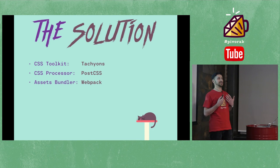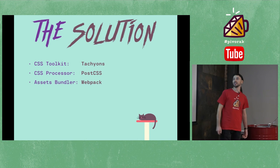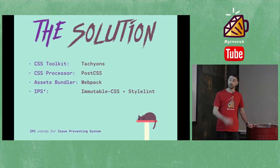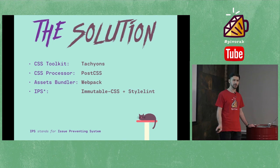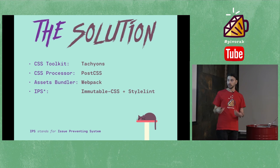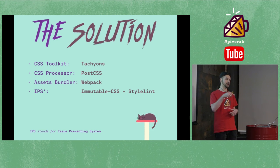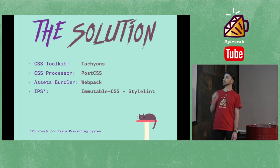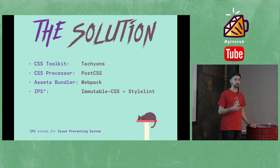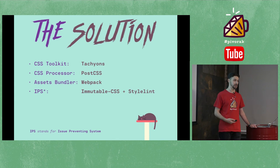So the plan - for CSS toolkit, I chose Tachyons, a functional CSS framework. We will use PostCSS instead of Sass. We already migrated to Webpack. We are a Rails application, and before we used Rails asset pipeline. I hate asset pipeline with every piece of my heart. That's the worst thing developed in Rails, in my opinion. And the IPS - issue-preventing system. I will use two tools: immutable CSS, a JavaScript library you can use with Gulp, Grunt, Webpack. It checks your CSS and tells you in Chrome console you're overwriting selectors. And StyleLint is a really good linter. You create rules how people should write CSS, and if they're doing something wrong, the Webpack build will fail.